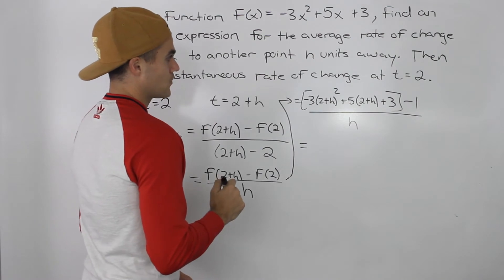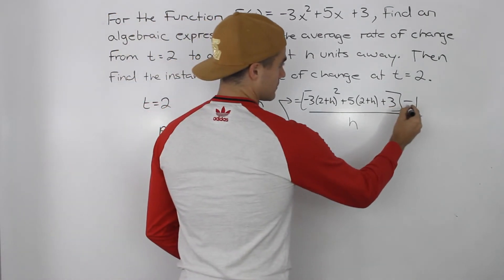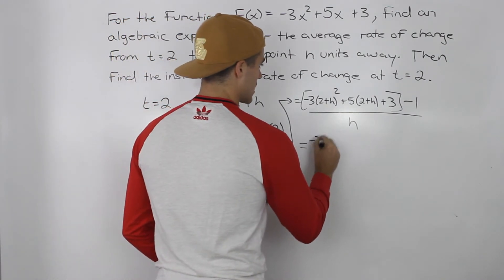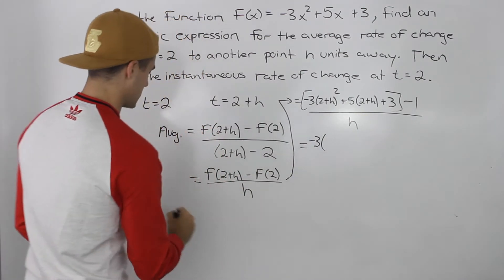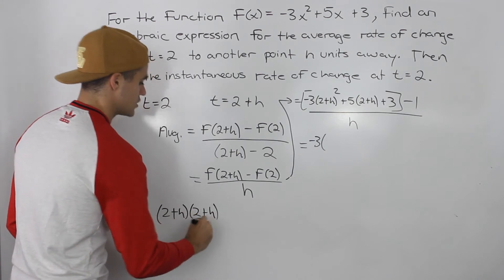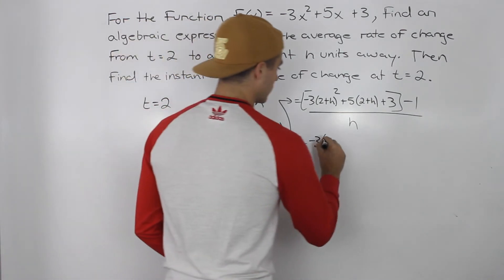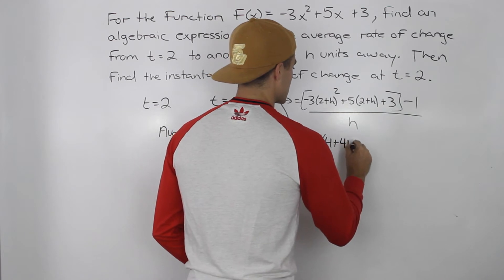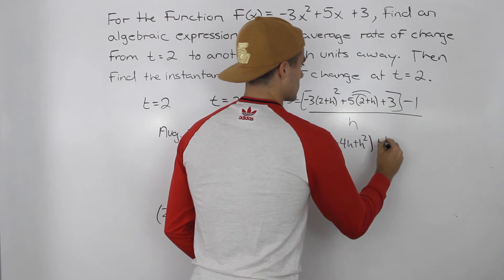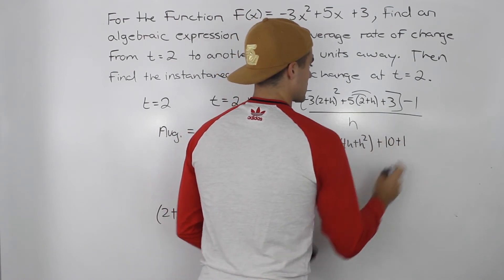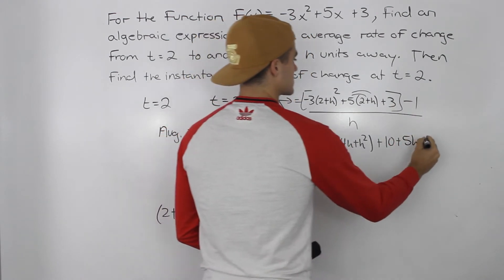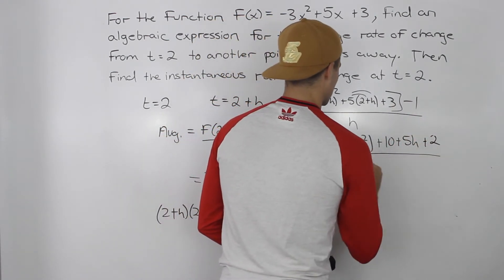Now we can do a lot of simplifying. The 3 minus 1 gives us 2. For (2 plus h) squared, we foil it out — 2 plus h times 2 plus h — which gives us 4 plus 4h plus h squared. Distributing the 5 gives us 10 plus 5h. And the 3 minus 1 gives us 2, all over h.